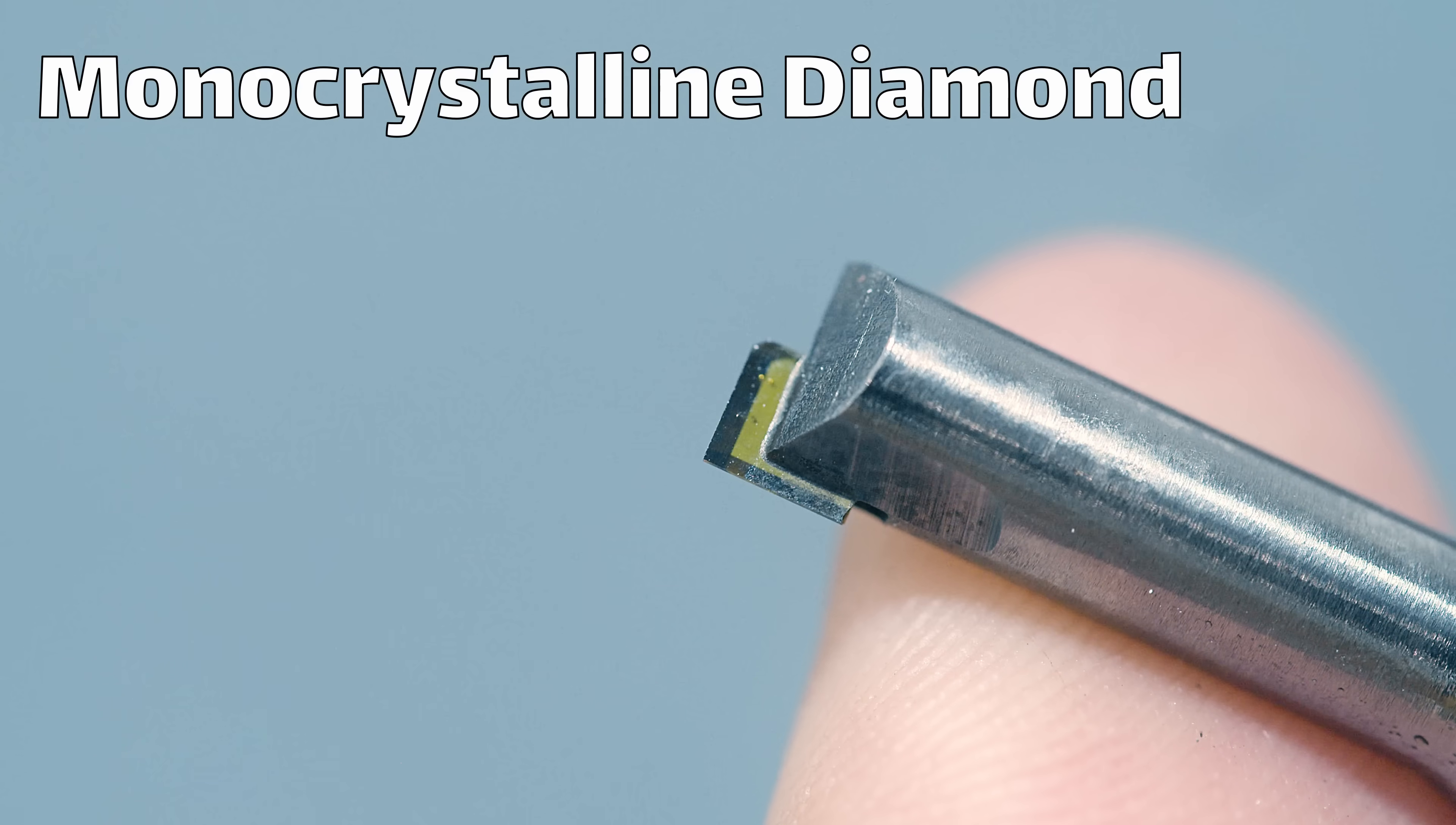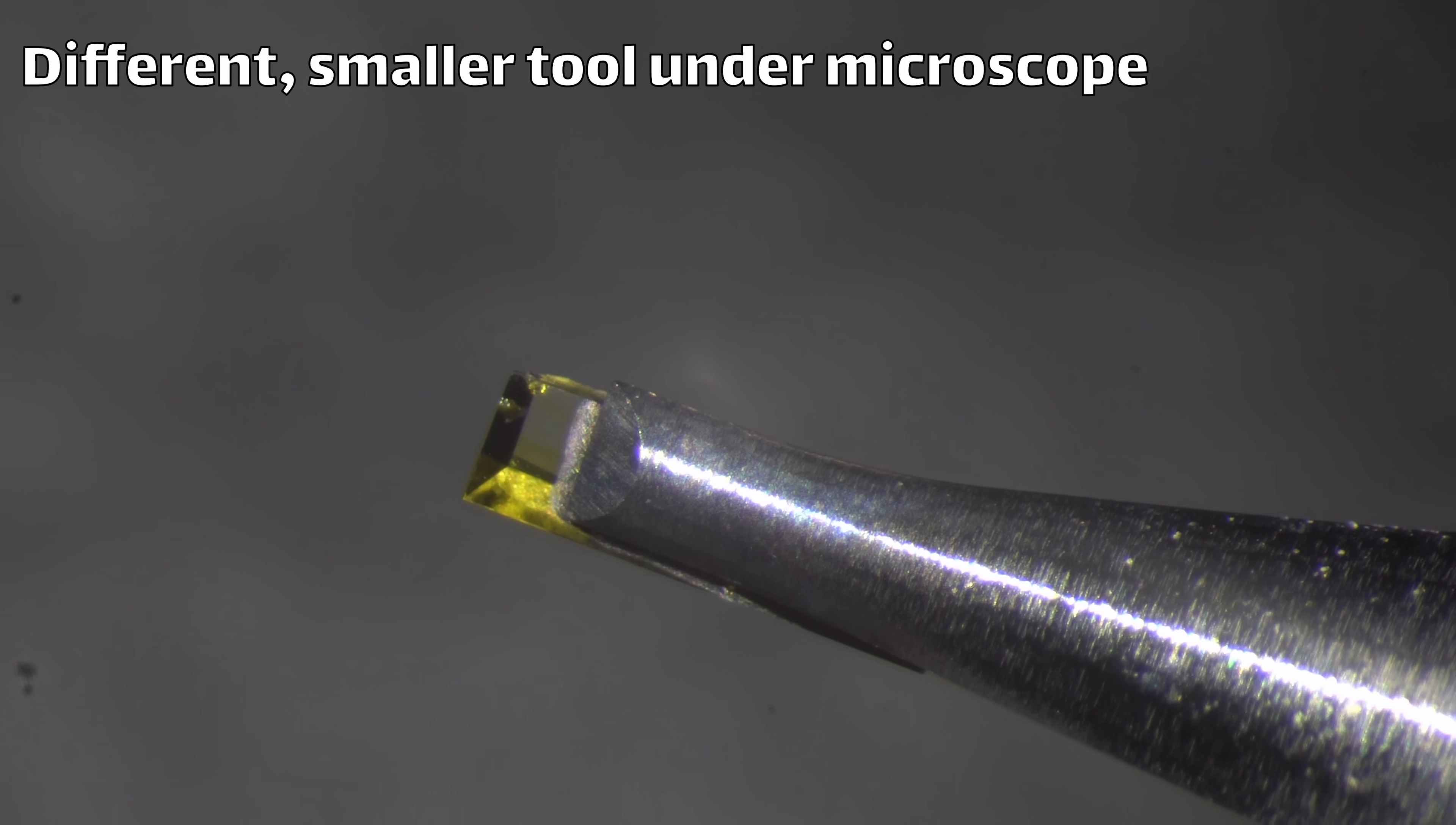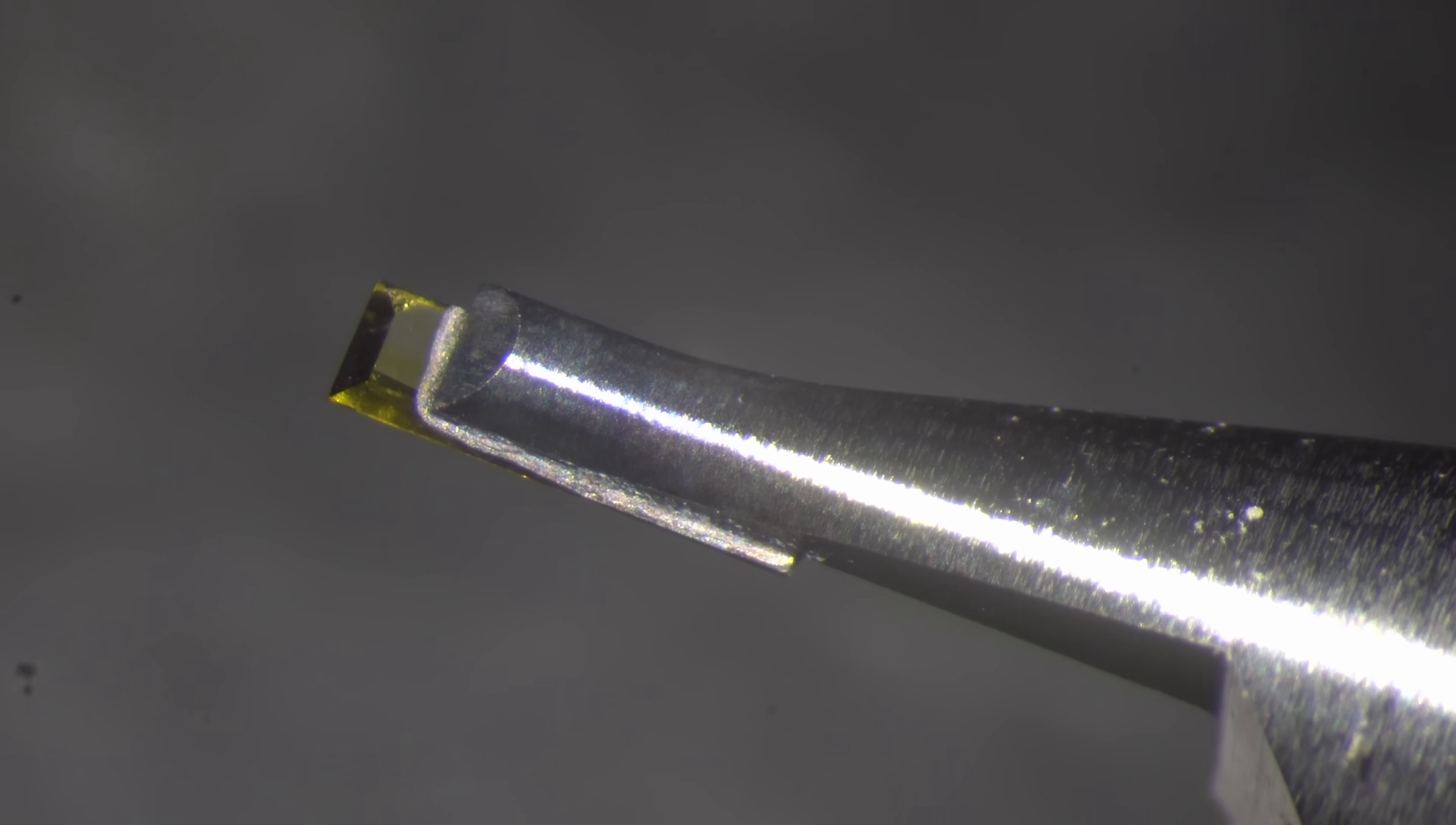This here is a monocrystalline diamond tool designed for milling. It's a diamond that has been grown as a single crystal, braised onto a carbide shank, and then polished to a very sharp edge. This diamond has a yellow color because of a high nitrogen content, which is common in diamonds grown with a high pressure, high temperature process. More expensive, better quality diamonds grown by CVD are usually transparent.